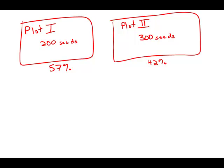So in plot 1, 57% of the seeds germinated. So 200 times 0.57, that means 114 of those seeds germinated. In plot 2, 42% of the seeds germinated. That means 300 times 0.42, that equals 126.